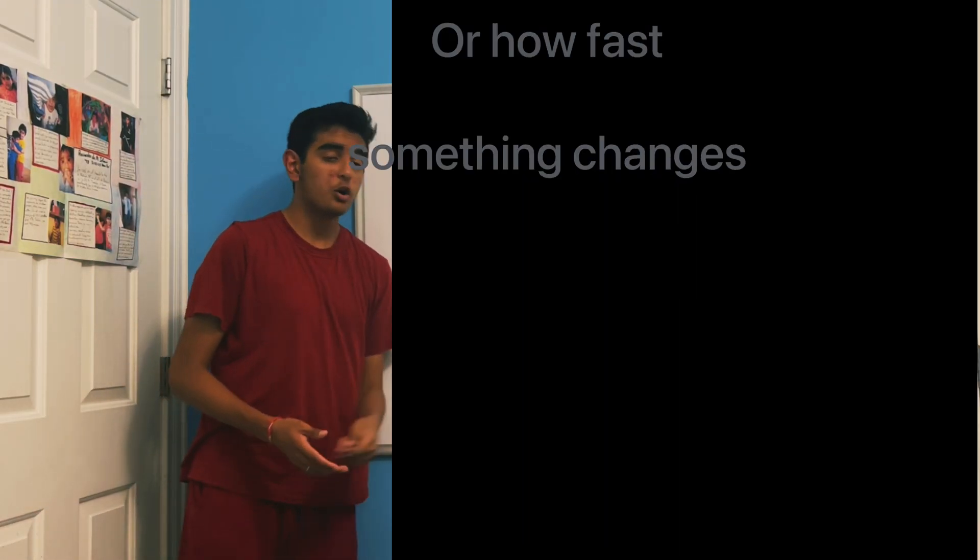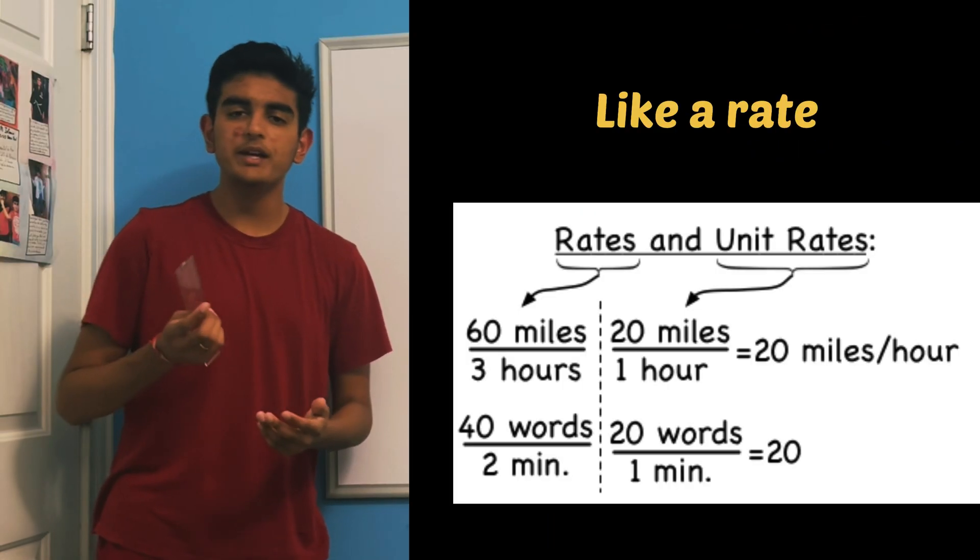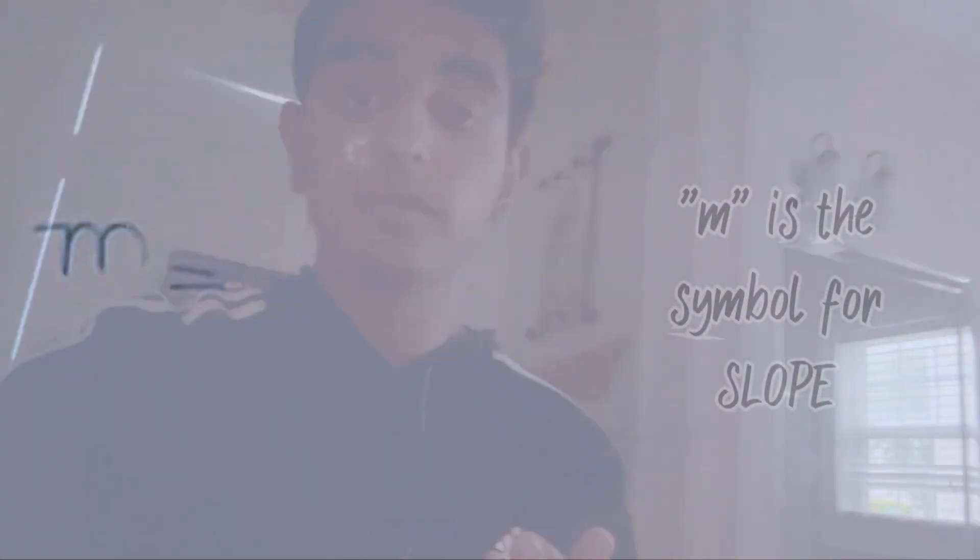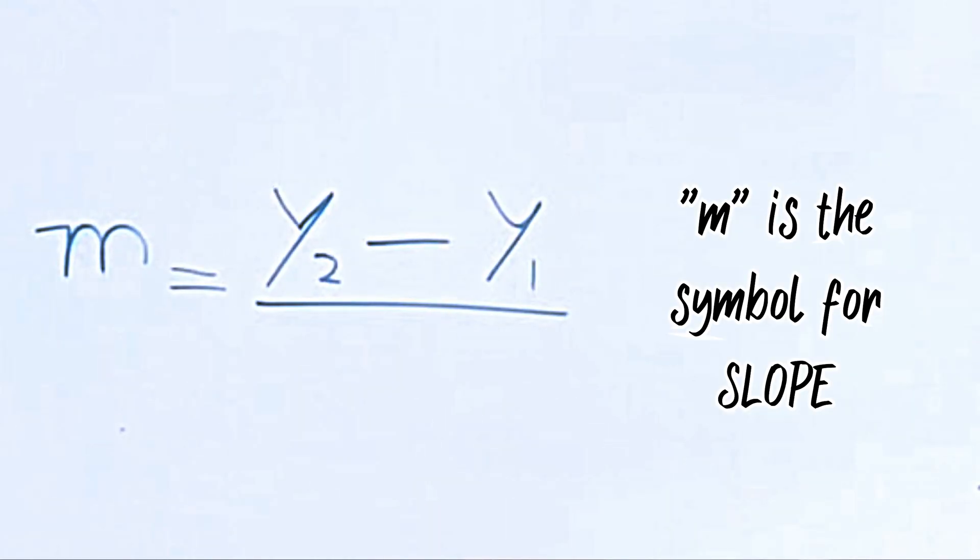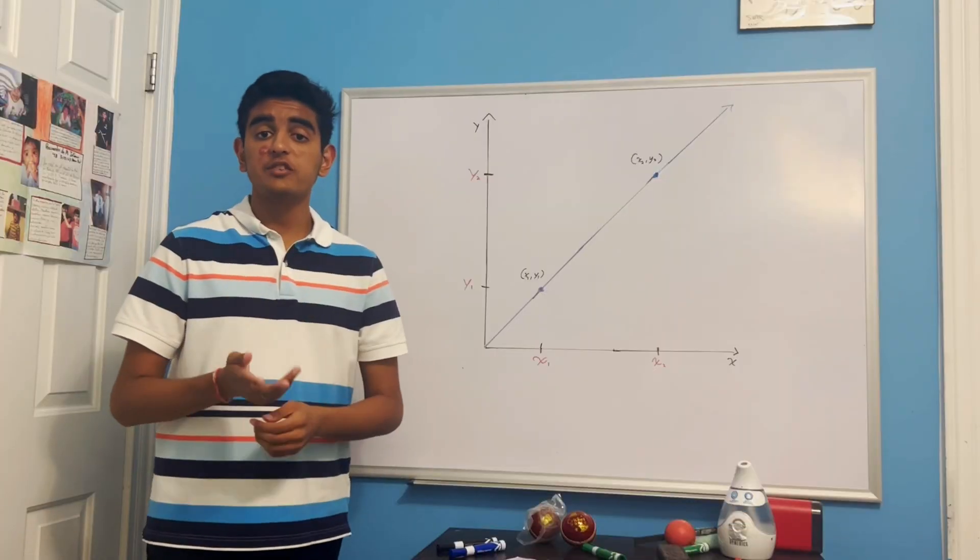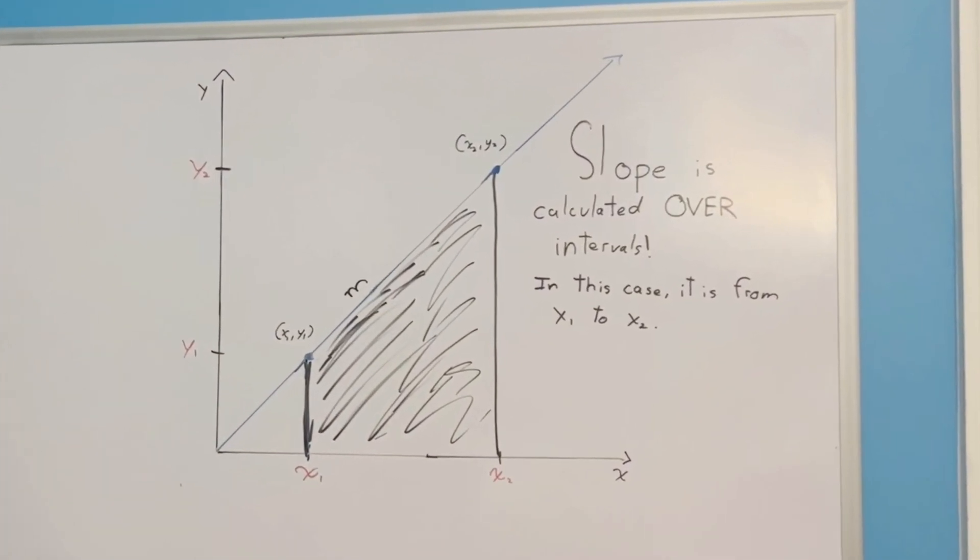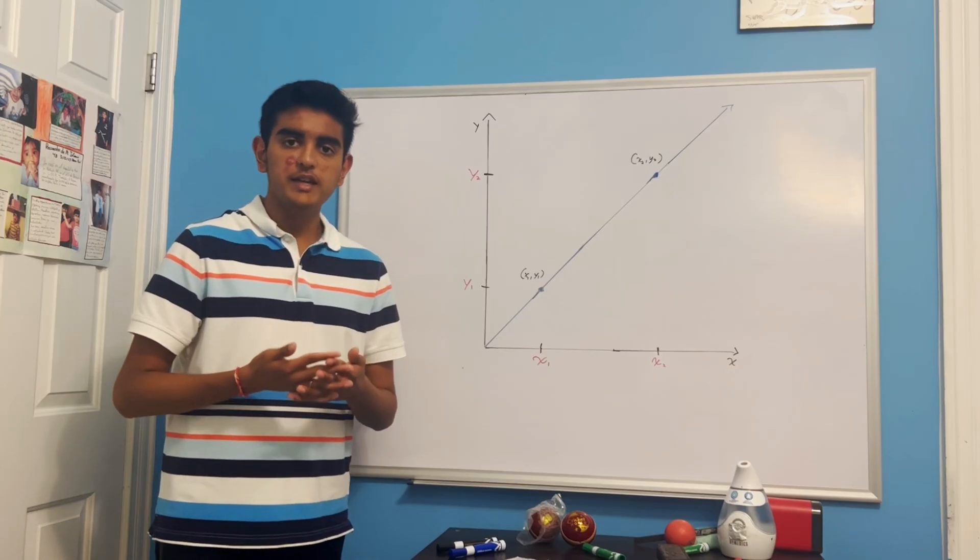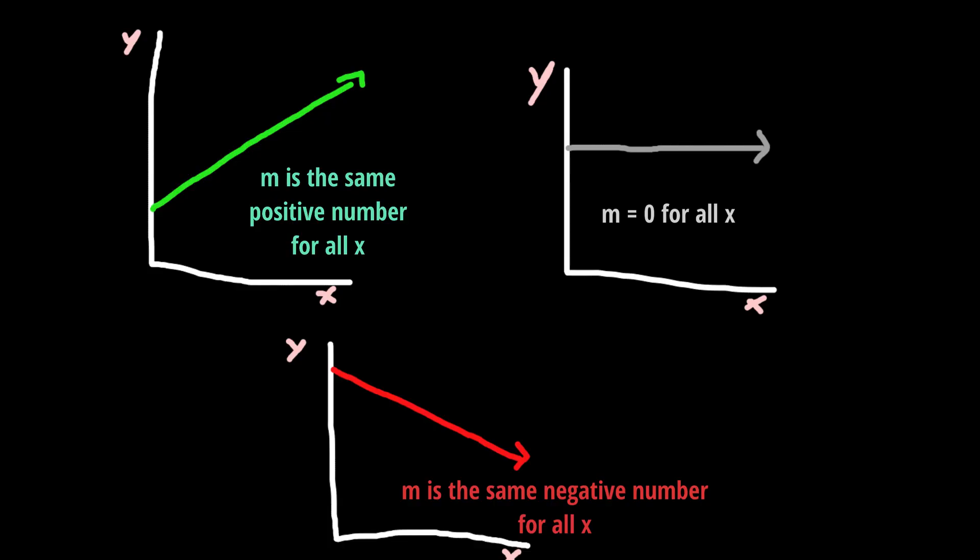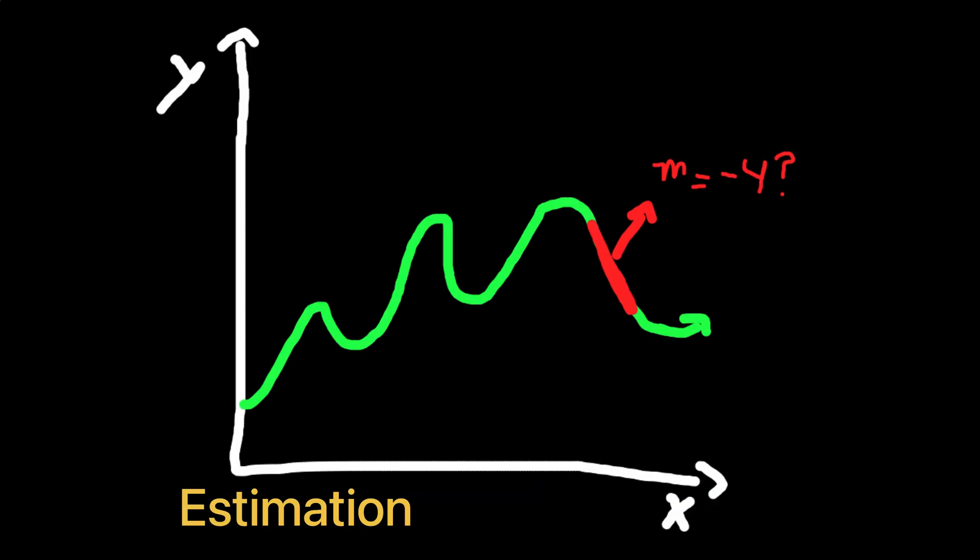A derivative is just a slope of the graph, or how fast something changes, like a rate. Derivatives are derived from the slope formula y2 minus y1 over x2 minus x1. However, x1 and x2 really just represent the intervals on the graph. So the formula is only accurate for functions with a constant rate of change, and for curvy functions, it'd have to be an estimation.